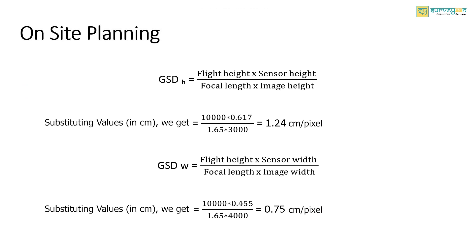The formula to calculate the GSD has two versions — one for height and one for width. GSD height equals flight altitude multiplied by sensor height, divided by focal length multiplied by image height. GSD width equals flight altitude multiplied by sensor width, divided by focal length multiplied by image width. The values used here are from a specific camera — you can find your camera's parameters online. The height and width of images can be found in the properties of any image taken with the camera. The final height and width GSD values are then converted to centimeters.